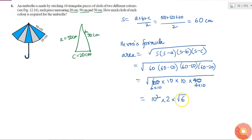6 is not a perfect square so I will be leaving it like this. So this is equal to 200 root 6 cm square. This is the area of one piece of cloth.